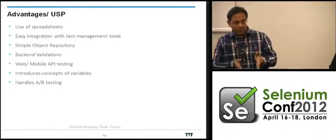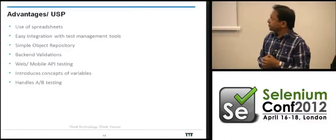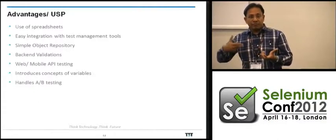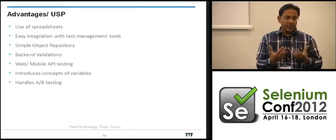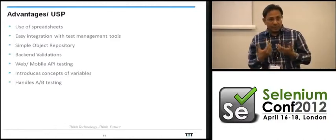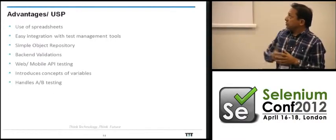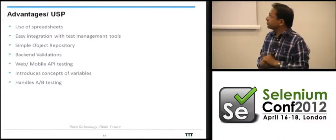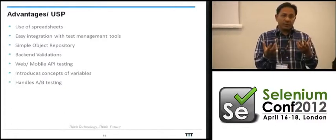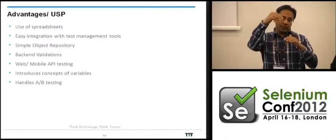The object repository is abstracted out and defined in a simple way, so it can be modified by either a developer or a QA engineer. We allow hooks to do back-end validation — things you can't do through the front-end require going to the database to get values. We also provide an easy way to do API testing, driven through spreadsheets. We've introduced the concept of variables which allows A/B testing — you set a variable and the test case automatically picks up the values needed.